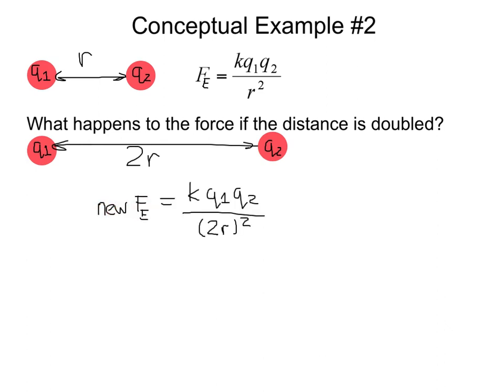So now we have the new electric force is equal to K, Q1, Q2, divided by 2R squared. Well, what is 2R squared? Well, 2R times 2R is 4R squared. So let's put that in the denominator. So now we have the new electric force is K times Q1, Q2, divided by 4R squared.